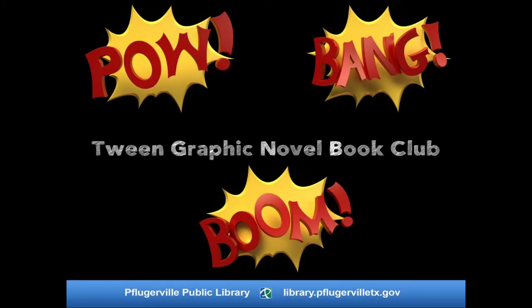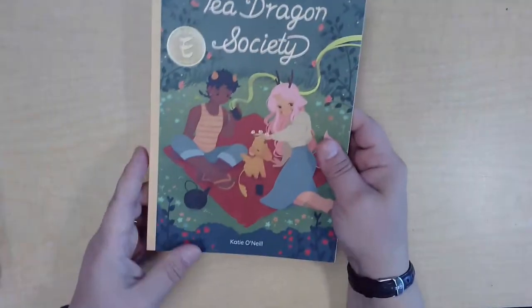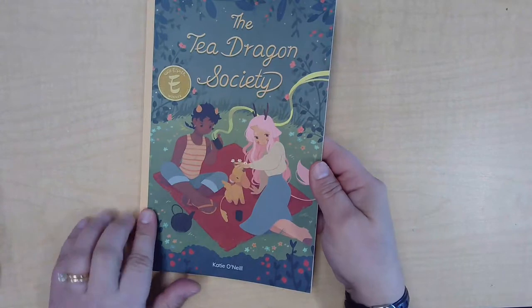Tween Graphic Novel Book Club, September. Hi, tweens, and welcome to the activity video for September's book, The Tea Dragon Society, written by Katie O'Neill.